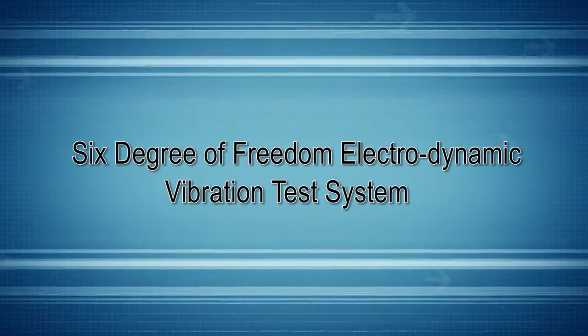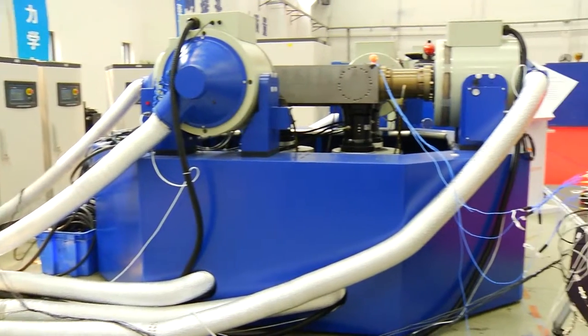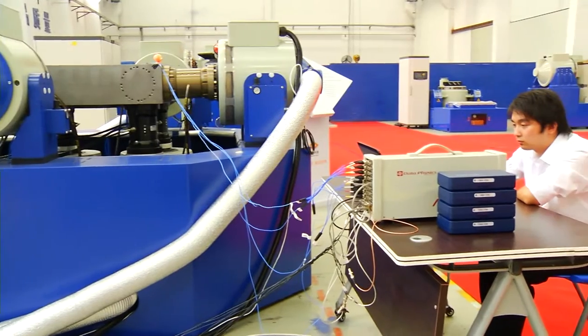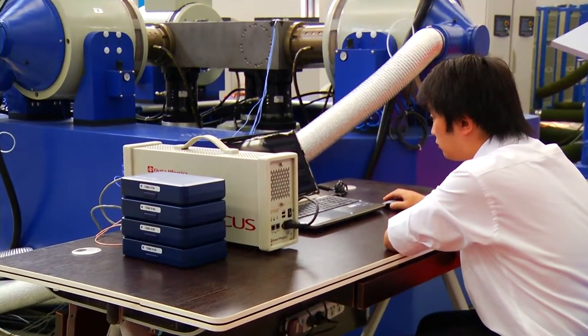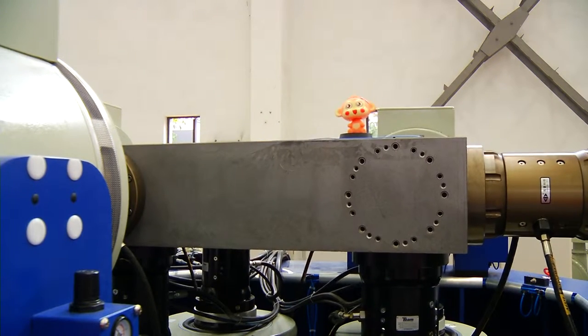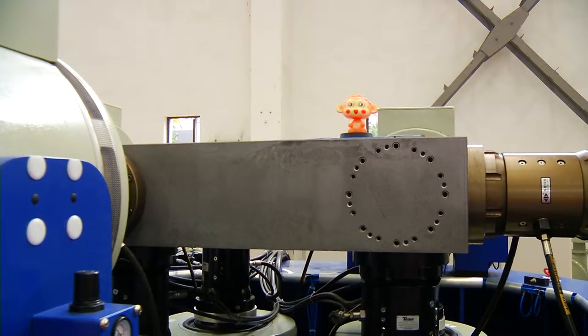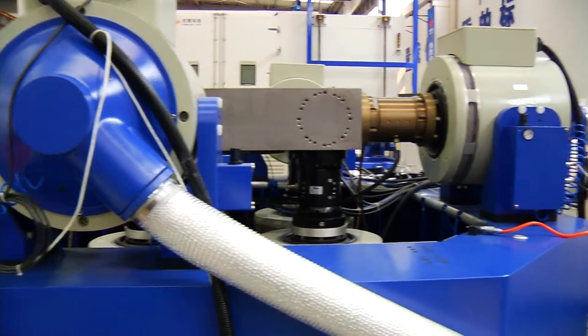Six Degree of Freedom Electrodynamic Vibration Test System uses 8 sets of 10 kN force shakers together to drive one table to achieve 6 degree of freedom motion. This system is state-of-art equipment to simulate the actual working environment.